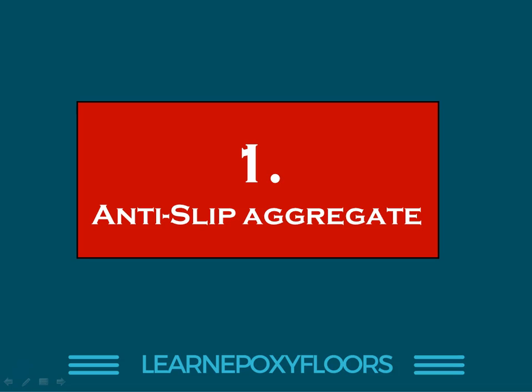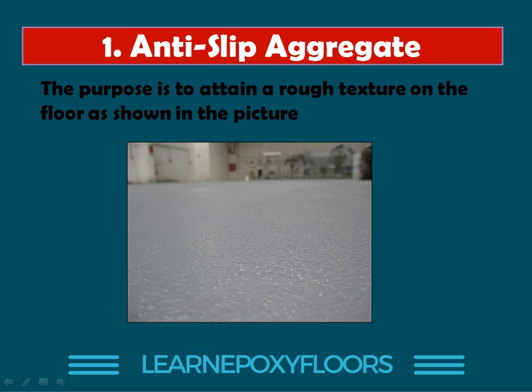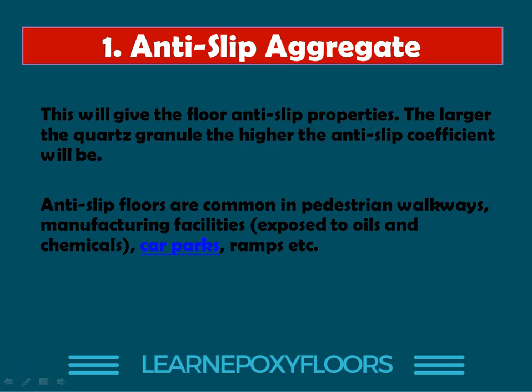The first use of quartz is using the sand as an anti-slip aggregate. When we want an anti-slip floor — a floor that's rough — you can use sand to create this texture, like in this picture. This is from a factory we did that was an olive oil packaging factory, and they wanted a rough surface because they didn't want the workers slipping on the epoxy. So we made a rough surface using quartz sand.